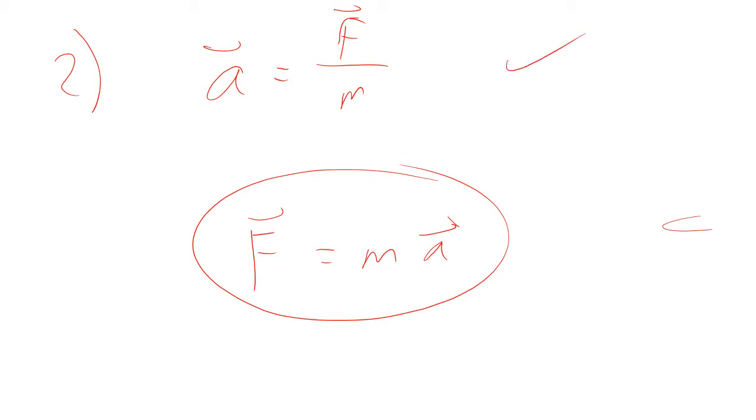So the way he put this was the acceleration is equal to the force divided by the mass. So this was Newton's second law of motion. Now we normally write it all in one line today. F equals MA. That way it's easier to write than writing a fraction here. But still, he originally wrote it, acceleration is force over M.